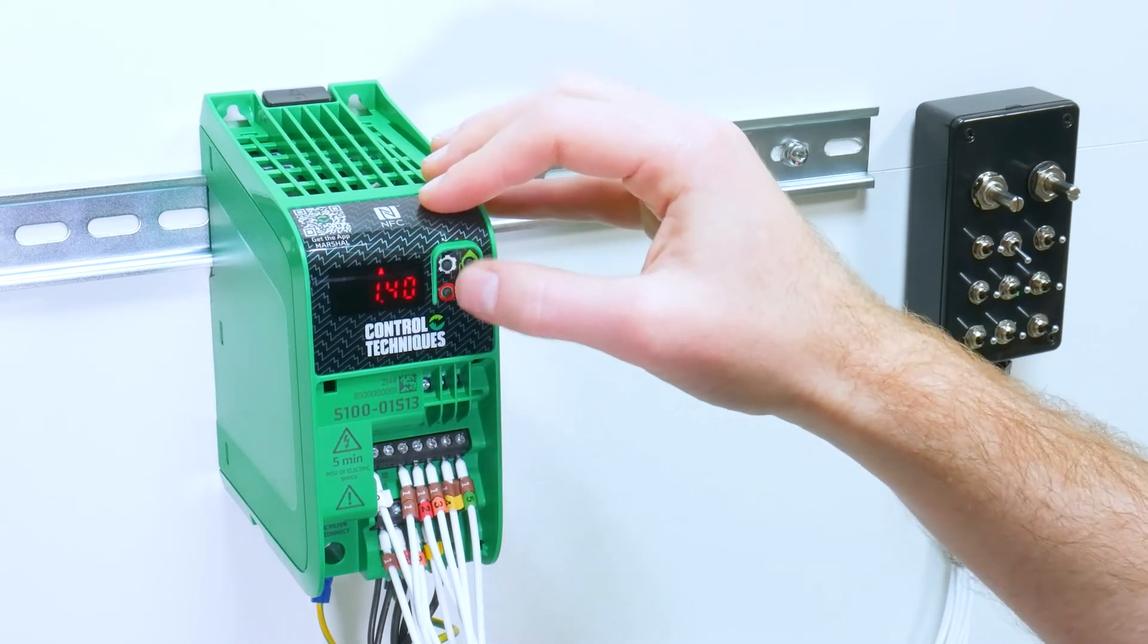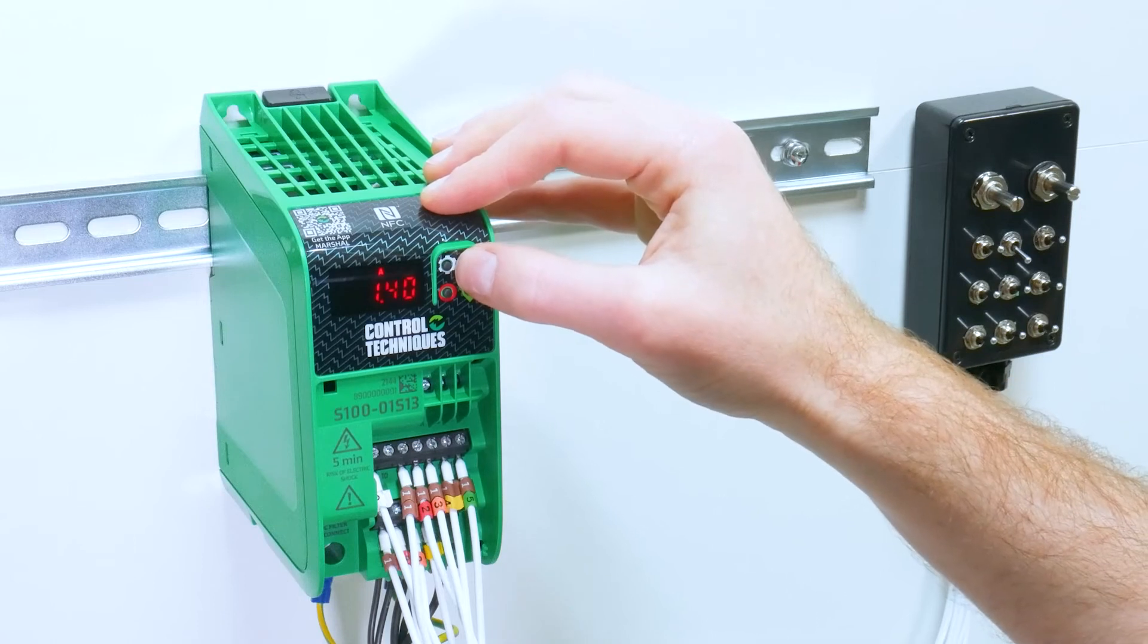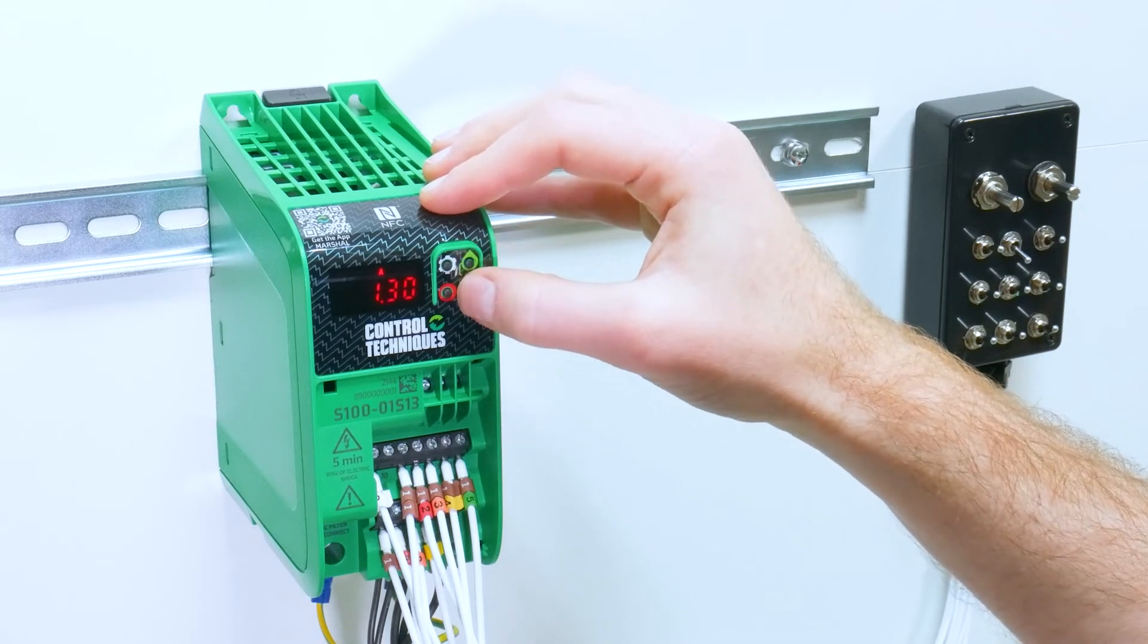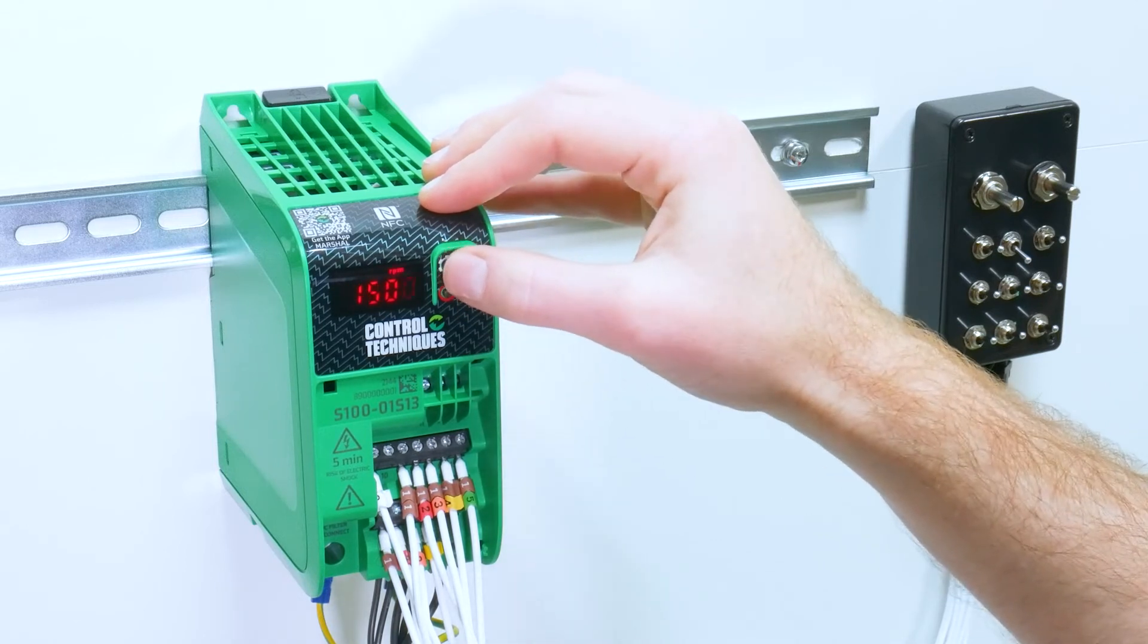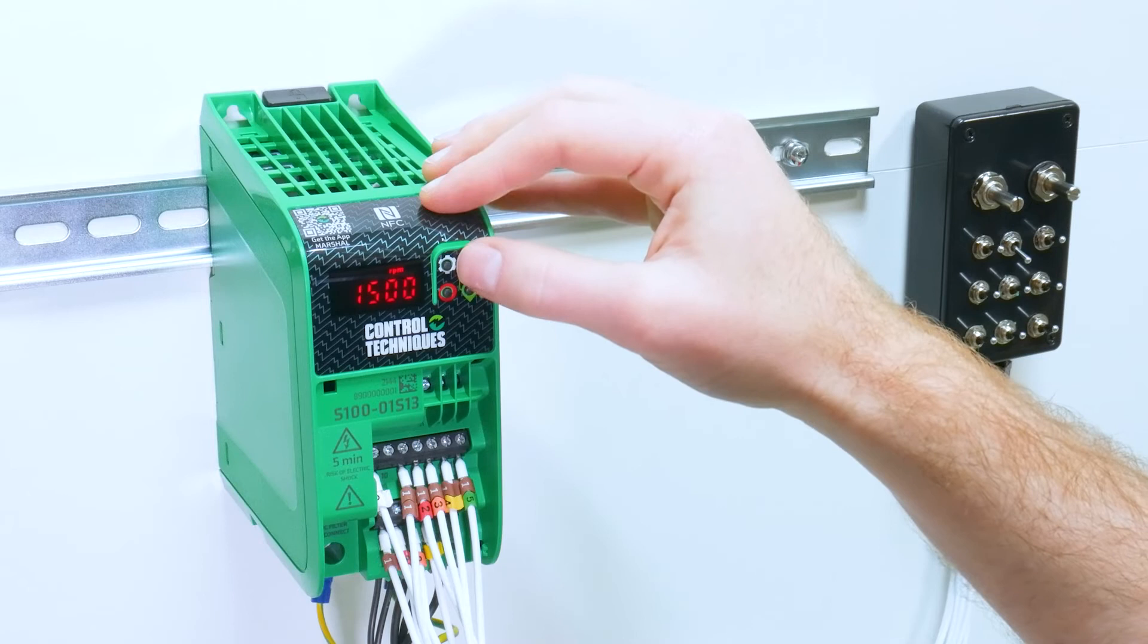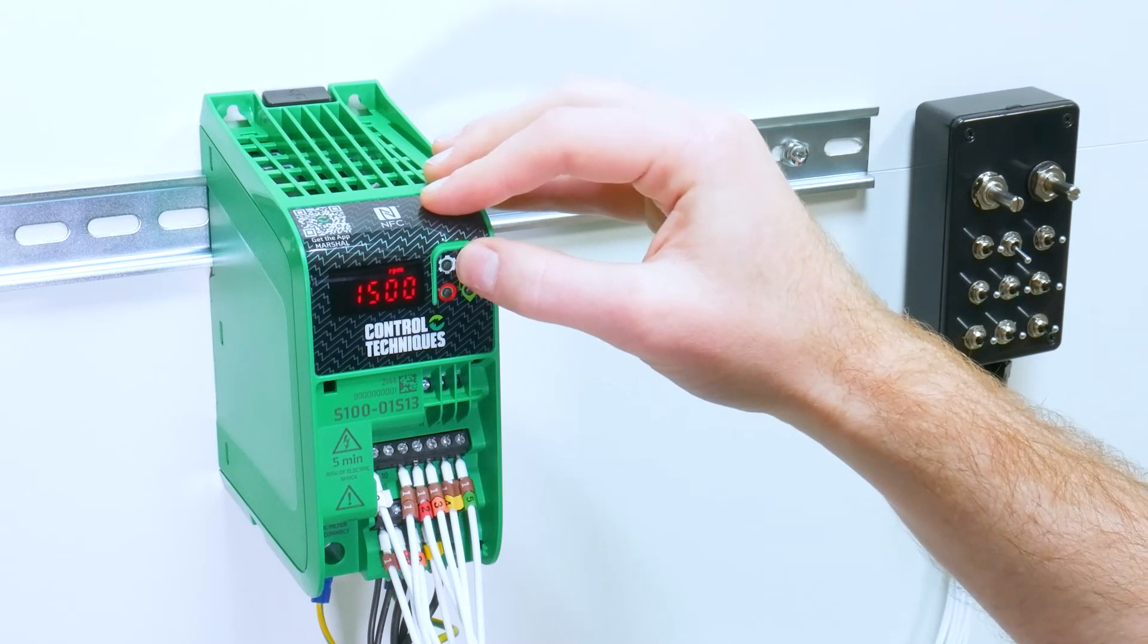Parameter six is our motor rated current. For me this is 0.7 amps. Parameter seven is our motor rated speed. I can scroll across to the hundredth digit by holding the up key.